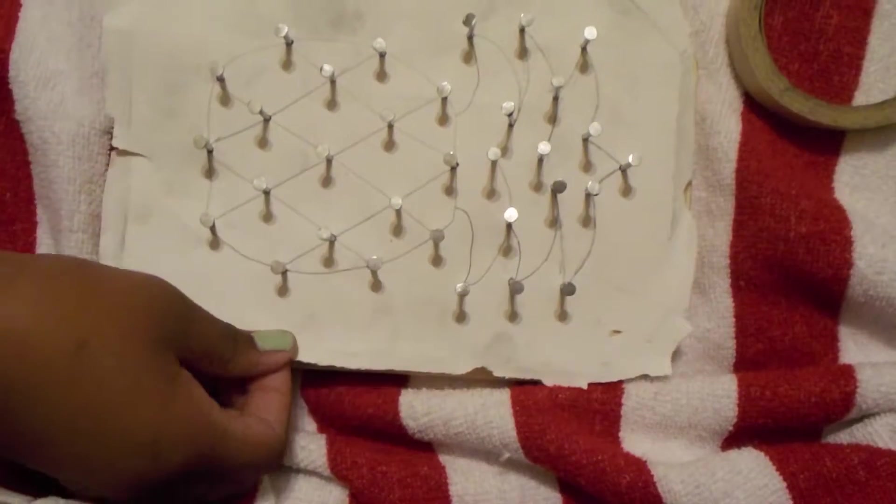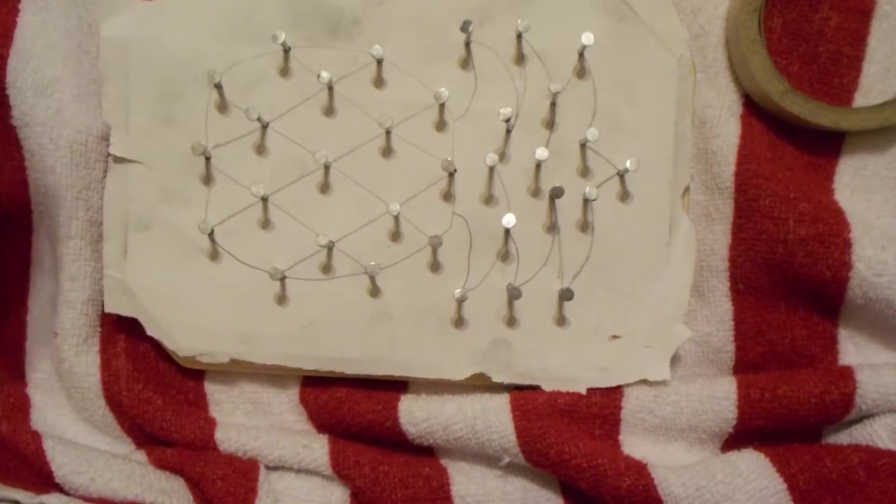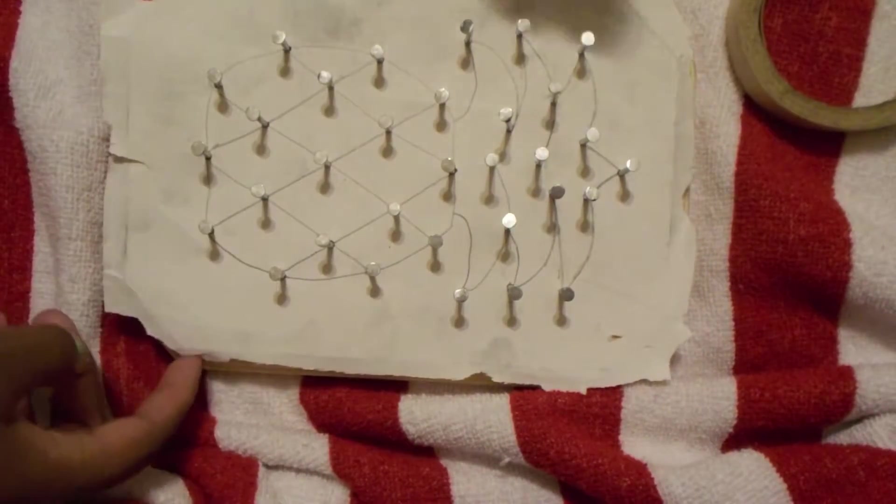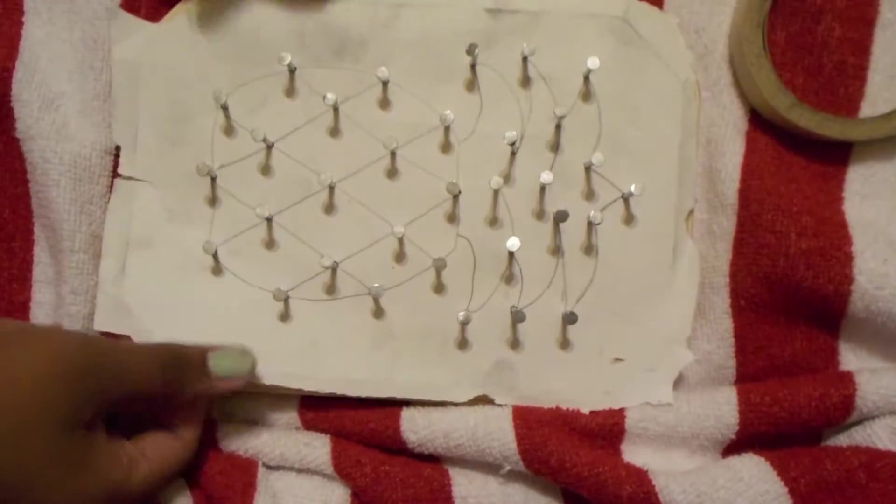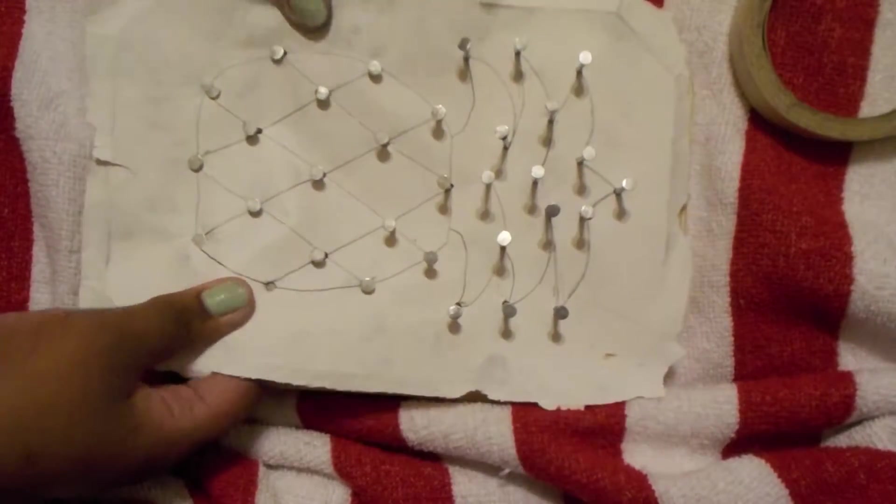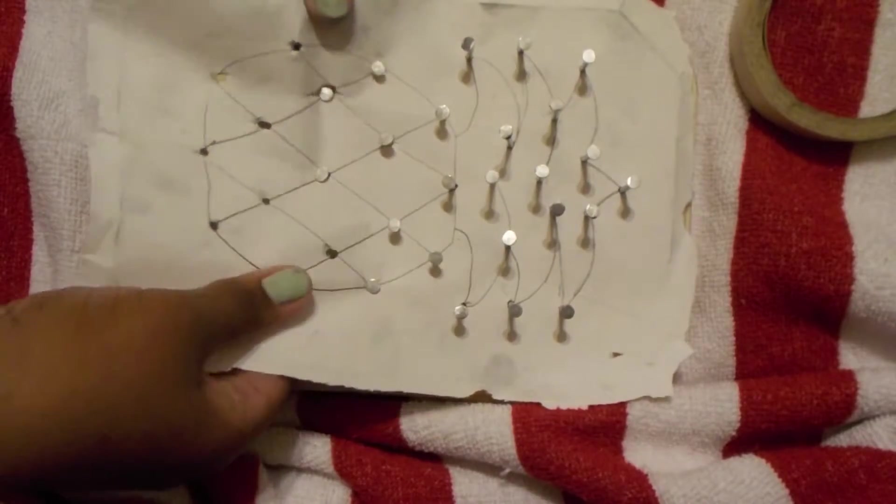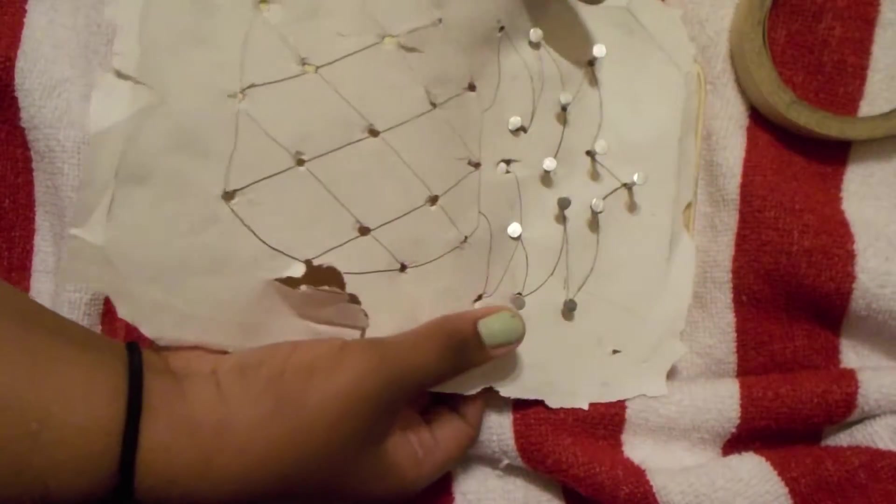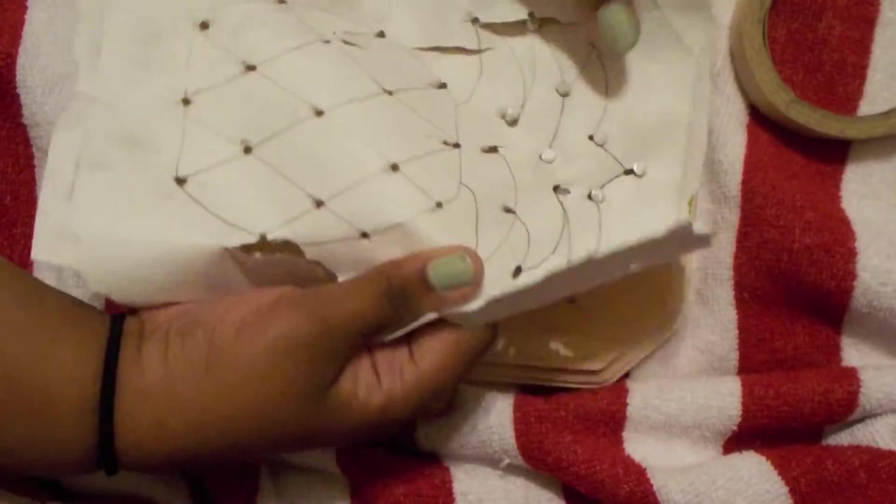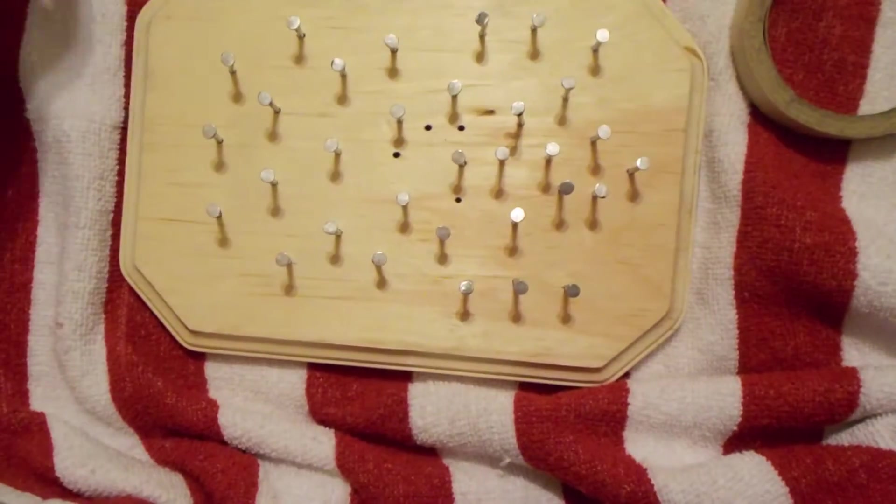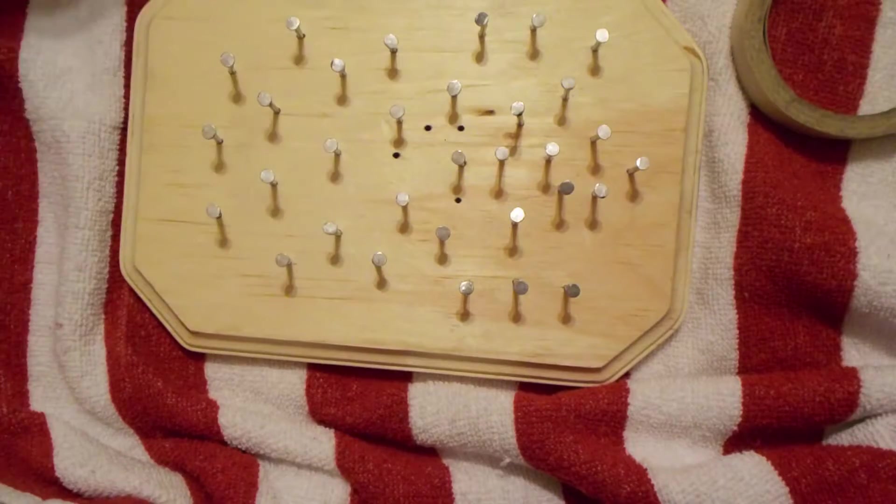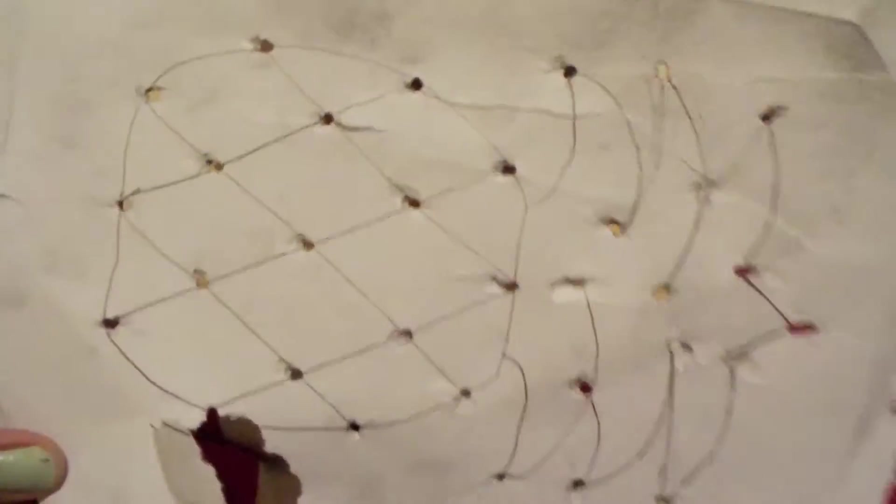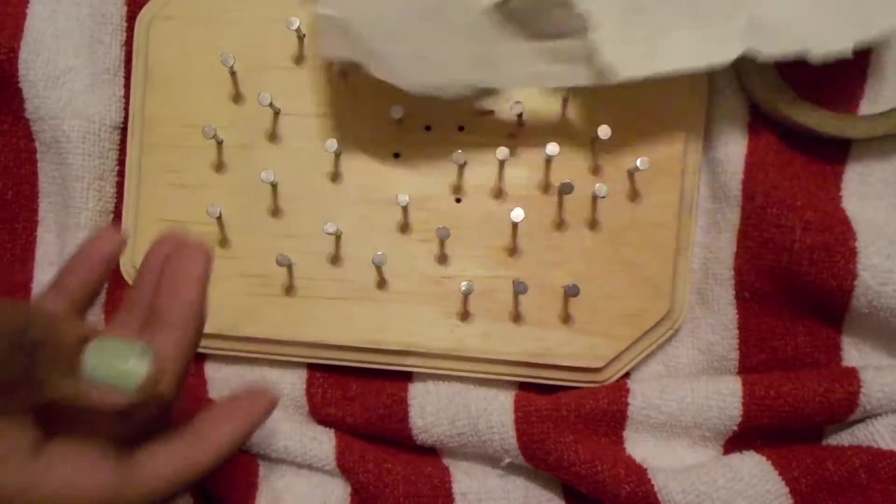Now once you're done putting the nails into the whole pineapple, you want to take off the excess tape around the edges and pull the pineapple paper from the nails like so. Now this part doesn't matter if it rips, but it should leave a clean getaway. But you kind of want to keep it to know what it looks like while you're doing the pineapple.